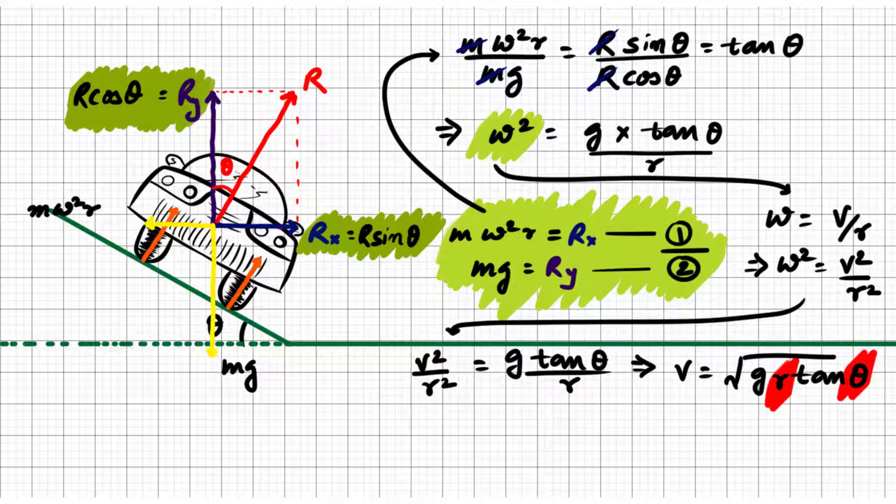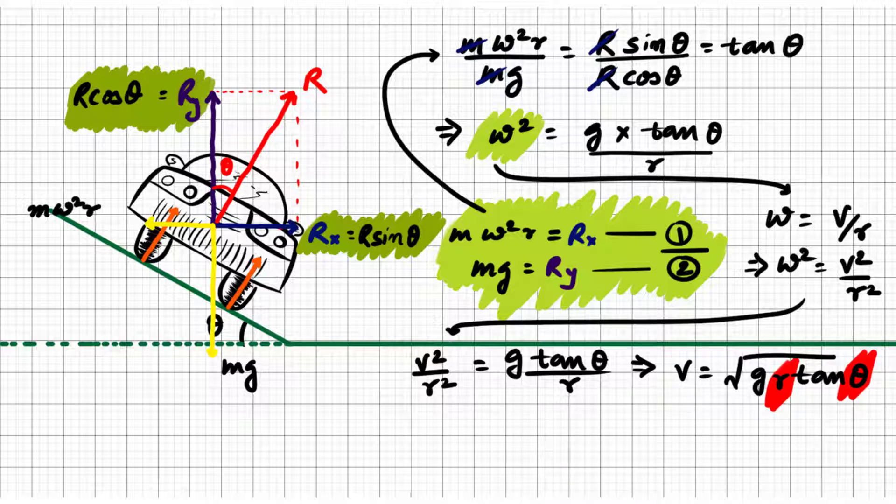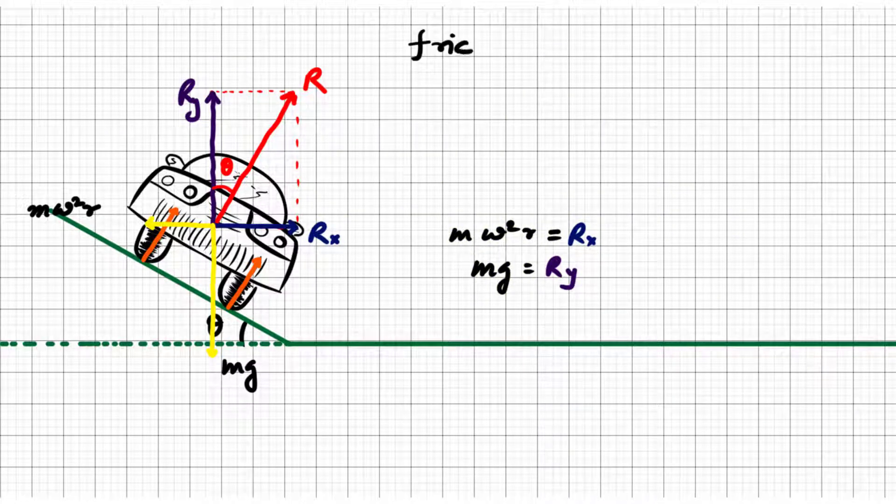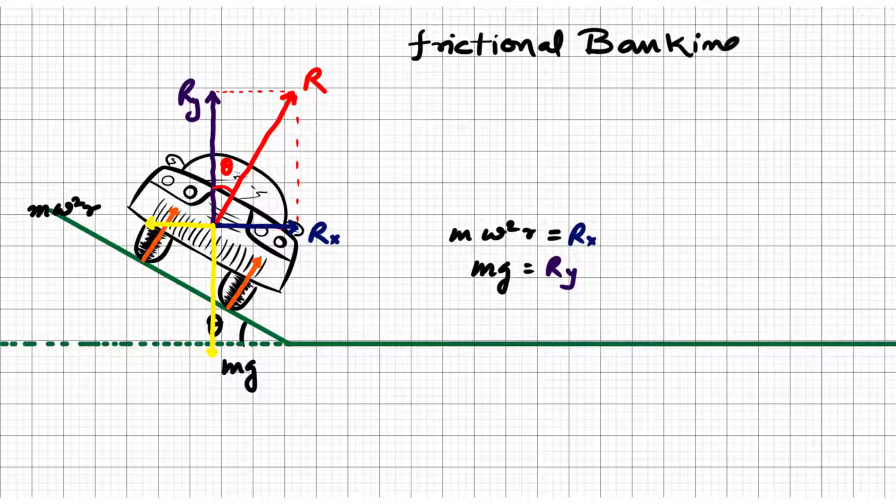In this case, maximum velocity depends on the radius of the curve and the banking angle. But for the real-life scenario, it is really hard to achieve that sweet spot, so friction is also taken into account.